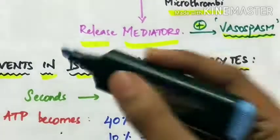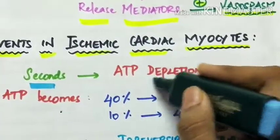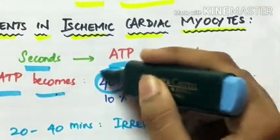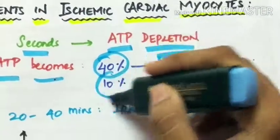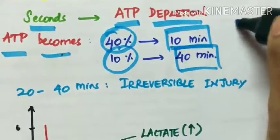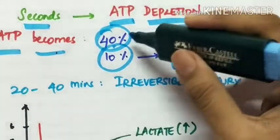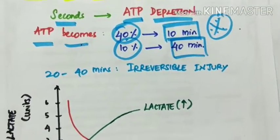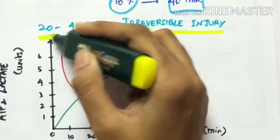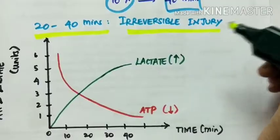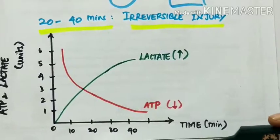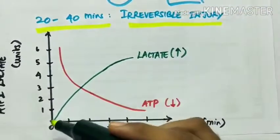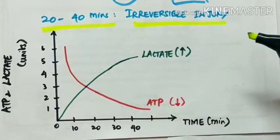Within seconds, depletion of ATP starts. ATP becomes 40% in 10 minutes and 10% in 40 minutes. Irreversible injury starts within 20 to 40 minutes. A simple graph represents the decrease of ATP over time and the increase of lactate production in the myocytes.